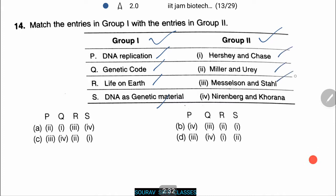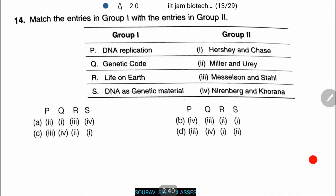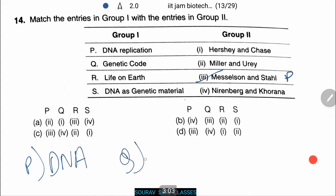Let's check this out. Starting with P — DNA replication. This was demonstrated by Meselson and Stahl. DNA replication is a semi-conservative process, so the answer for P is number 3.